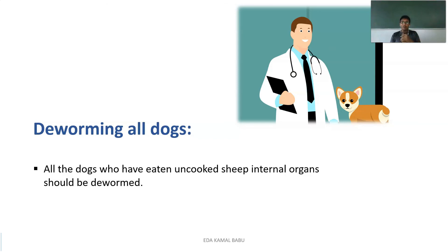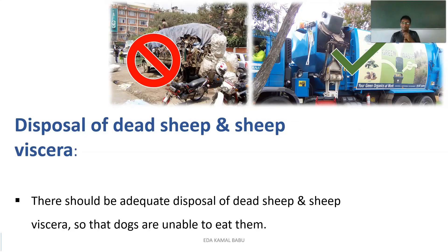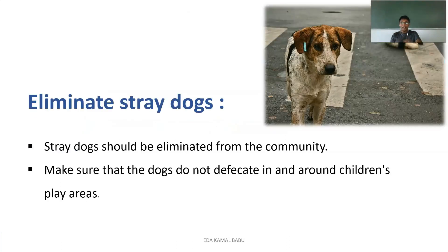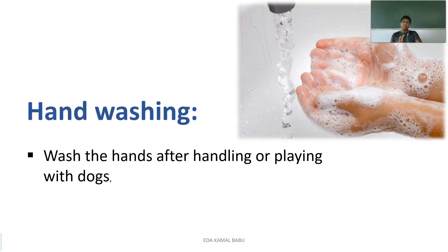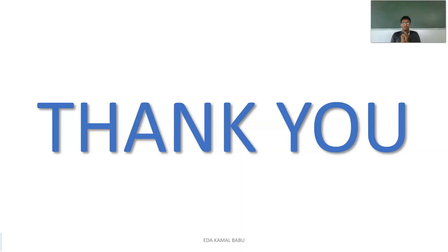For prevention and control: deworming of all dogs is essential, especially if a dog has eaten uncooked sheep internal organs. Dead sheep and sheep viscera should be disposed of properly and not thrown into the outer environment where dogs can access them. Stray dogs should be eliminated from the community, and dogs should not defecate around children's playing areas. Hand washing is the foremost preventive measure — prevention is better than cure.